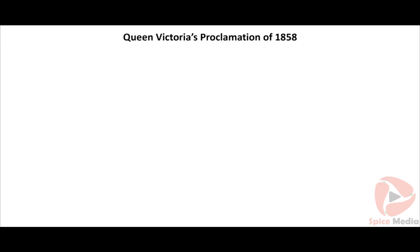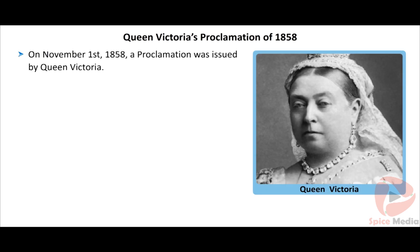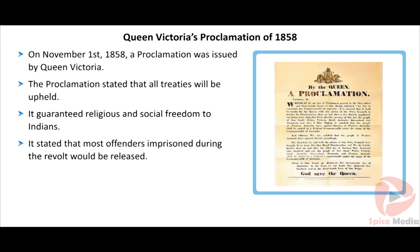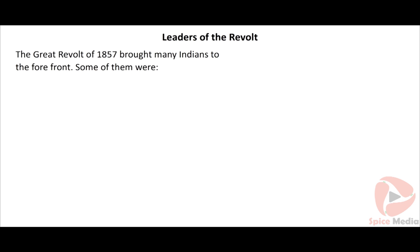Queen Victoria's Proclamation of 1858: On November 1st, 1858, a Royal Darbar was held at Allahabad, where Lord Canning read the proclamation issued by Queen Victoria. The proclamation stated that all treaties signed between the company and the Indian princes would be upheld. It guaranteed religious and social freedom to Indians and stated that most offenders imprisoned during the revolt would be released, except those involved in killing British officials. The proclamation was called the Magna Carta of India. The Great Revolt of 1857 aroused national feelings and was seen as the starting point of India's independence in 1947.